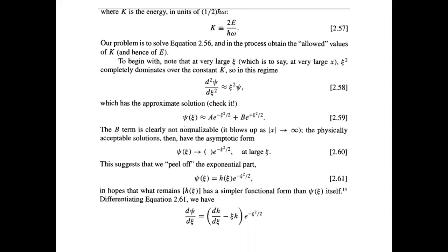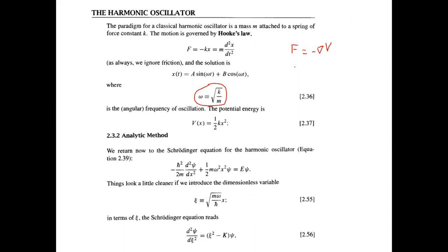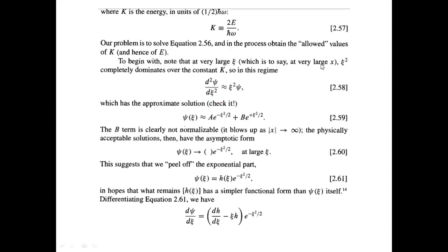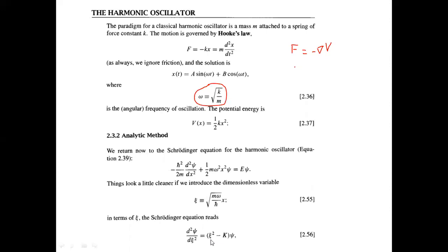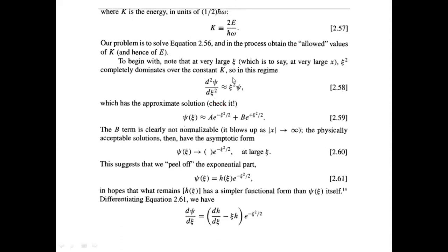What we need to find are the allowed values of energy for the simple harmonic oscillator — the allowed values of K in this solution. For large values of x, the x-squared term dominates, and the K term becomes negligible. So we drop the K term, and the equation simplifies to a form whose solutions are of the Gaussian-like form.